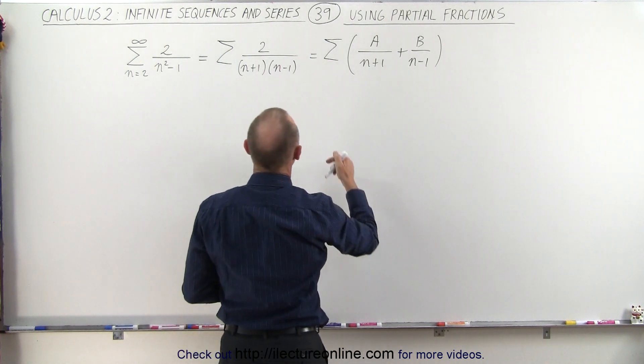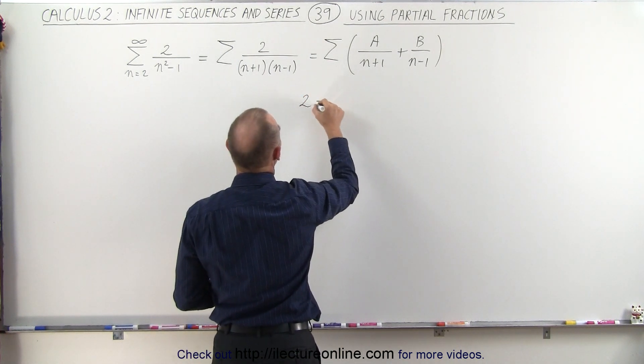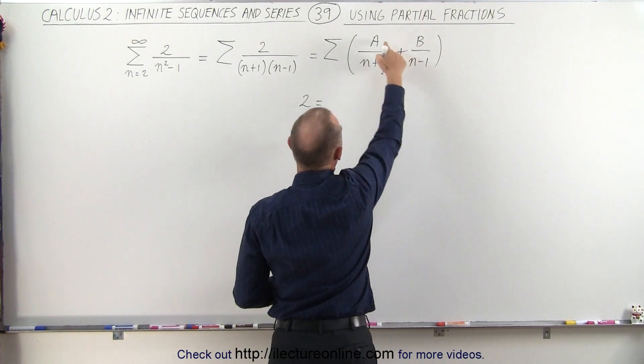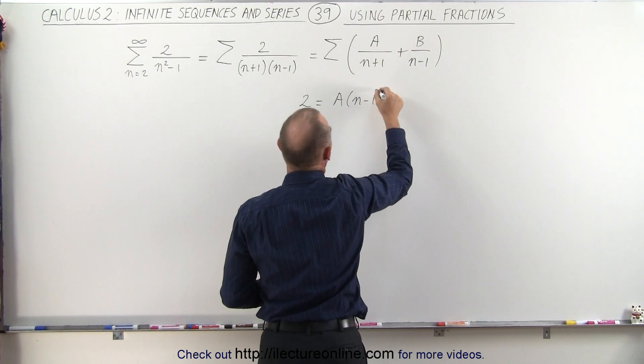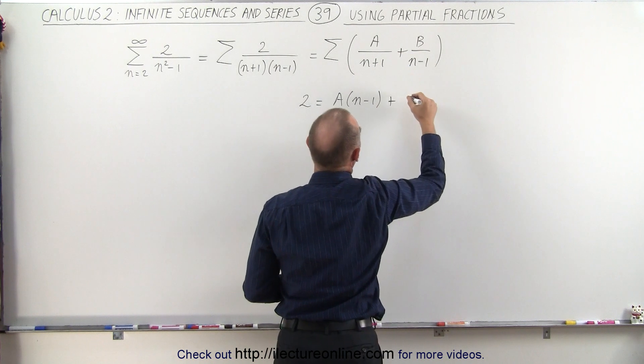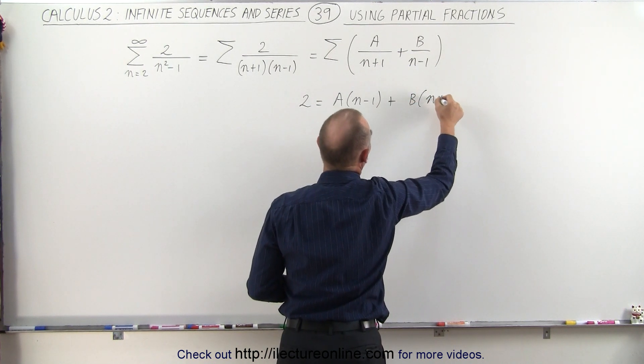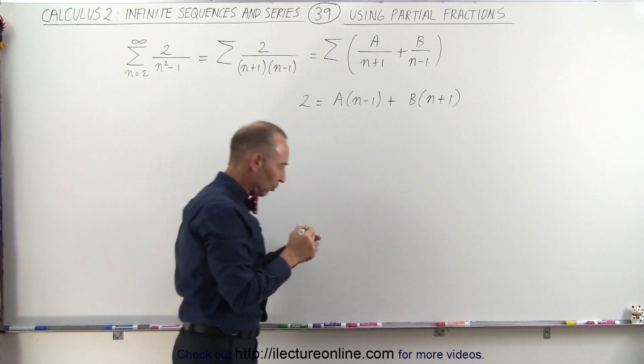So, how do we do that? Well, we can say that 2 is going to be equal to, when we multiply a times n minus 1, plus when we multiply b times n plus 1.